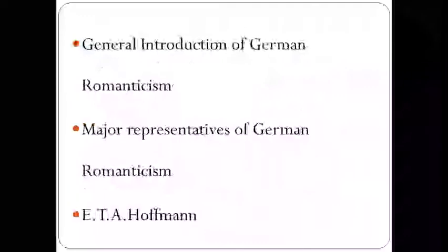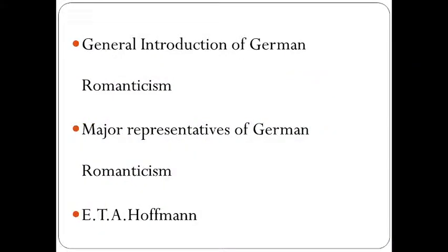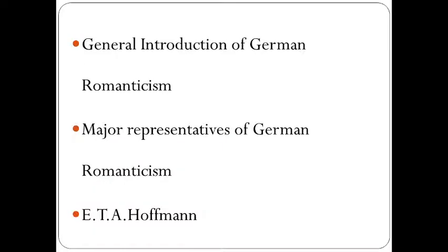We have three headings for this video lesson: the general introduction of German Romanticism, major representatives of German Romanticism, and Hoffman. German Romanticism was the dominant intellectual movement of German-speaking countries in the late 18th and early 19th centuries, influencing philosophy, aesthetics, literature, and criticism. Compared to English Romanticism, the German variety developed relatively early and in the opening years coincided with Weimar Classicism. In contrast to the seriousness of English Romanticism, the German variety notably valued wit, humor, and beauty.